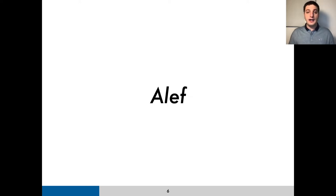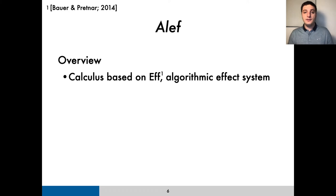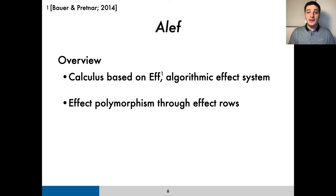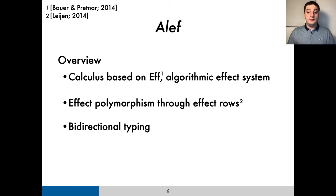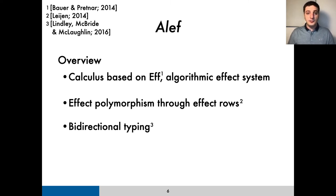To do this, we introduce Aleph, a basic calculus with algebraic effects and handlers based on F. In Aleph, we adapt F's effect system to incorporate effect rows, while keeping its solid semantic foundation and thus overcoming some of the first stage hurdles I mentioned before. The effect rows we use, though not exactly the same, are based on those found in COCA. Aleph's algorithmic type and effect system is formulated through the bidirectional typing discipline, thus leading to a direct implementation and effectively closing the second gap between theory and practice.